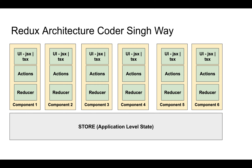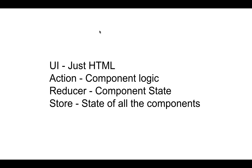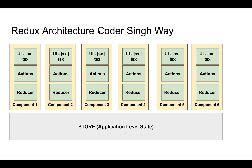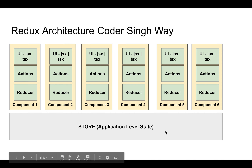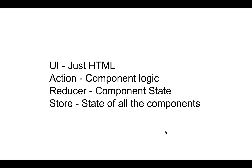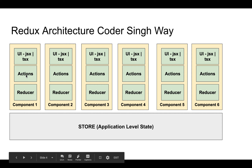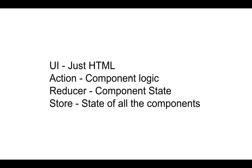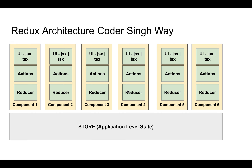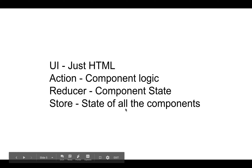The presentation link explains the difference between Context API and Redux. In the Redux architecture with React — the way I design it — we'll have UI (JSX or TSX file), actions, reducers, and a store for application-level state management. The UI holds the HTML, actions hold the logic, the reducer holds the component state, and the store holds the state of all components.